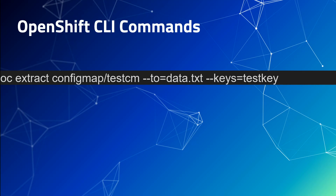For example, if you look at this oc extract command, it is being used to get or extract the data or key value from the testcm configuration map. All you need to do is run oc extract, then the name of your config map, and then specify where to save that data after you extract it. So I'll be storing the data in a data.txt file, and what I want to extract is the value of the key testkey from the config map.